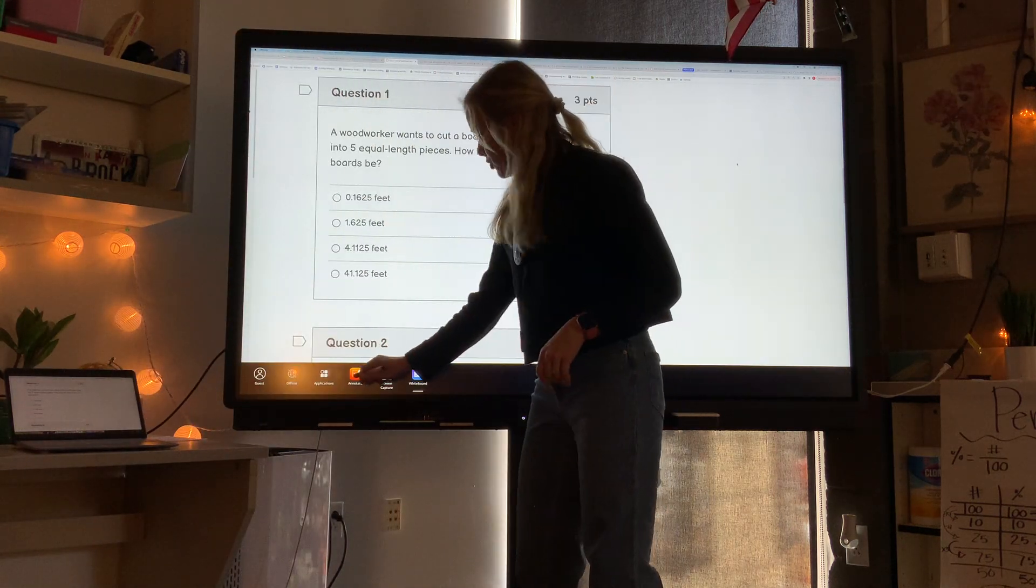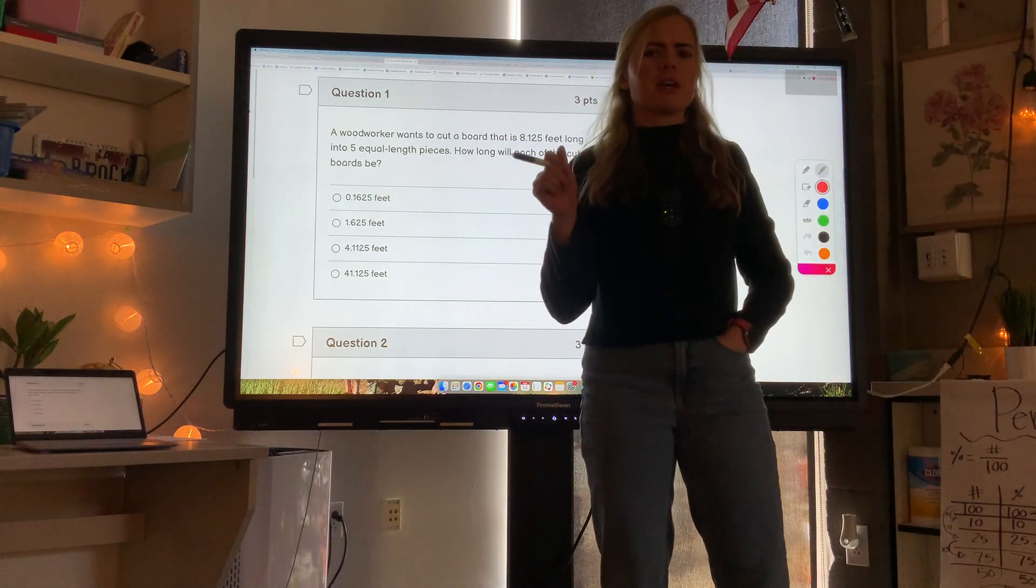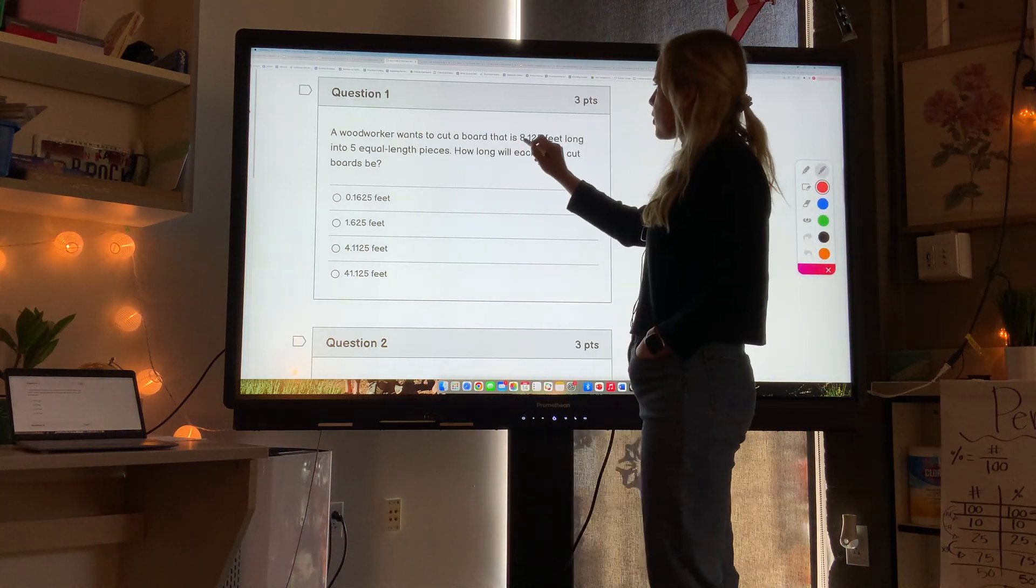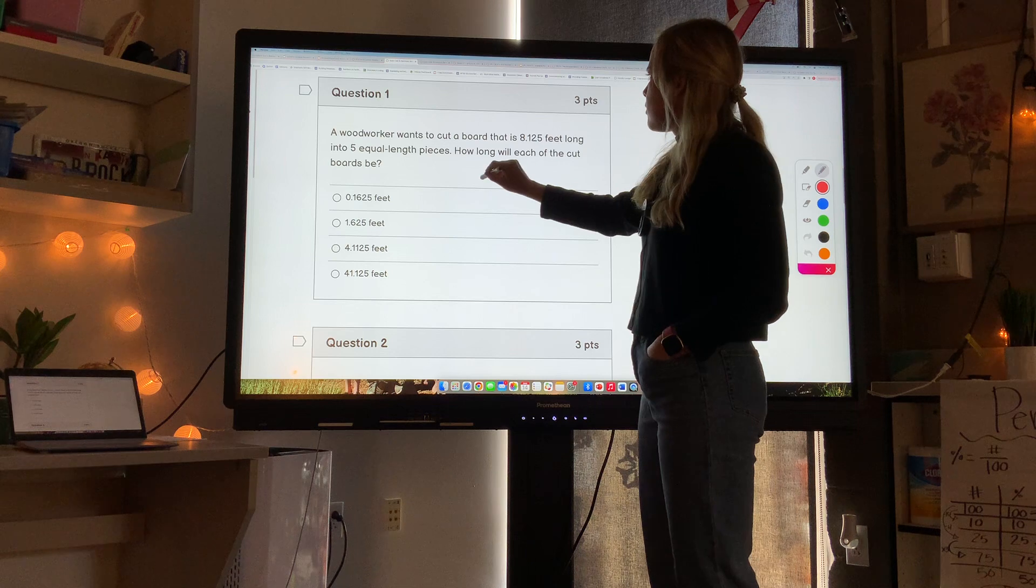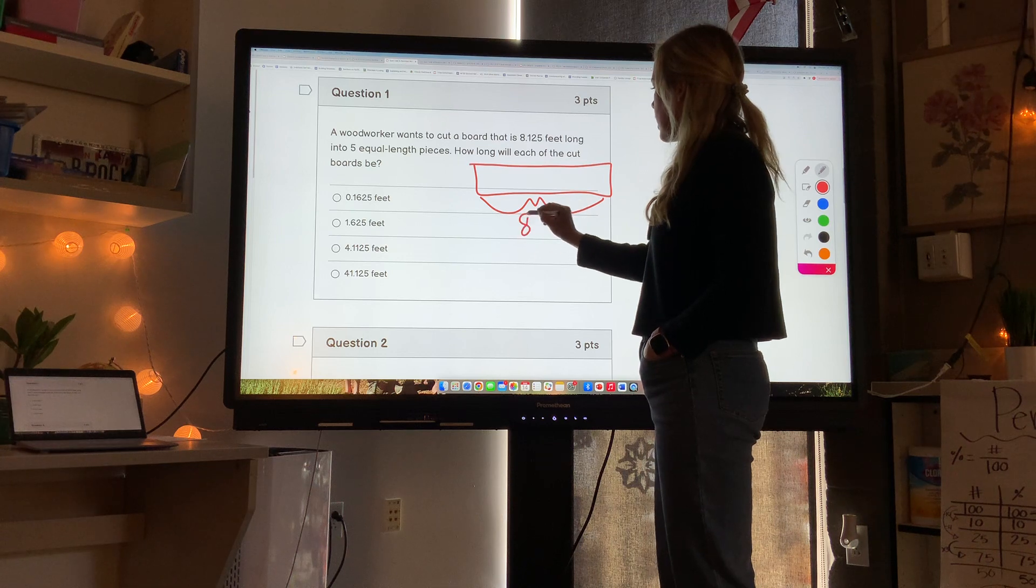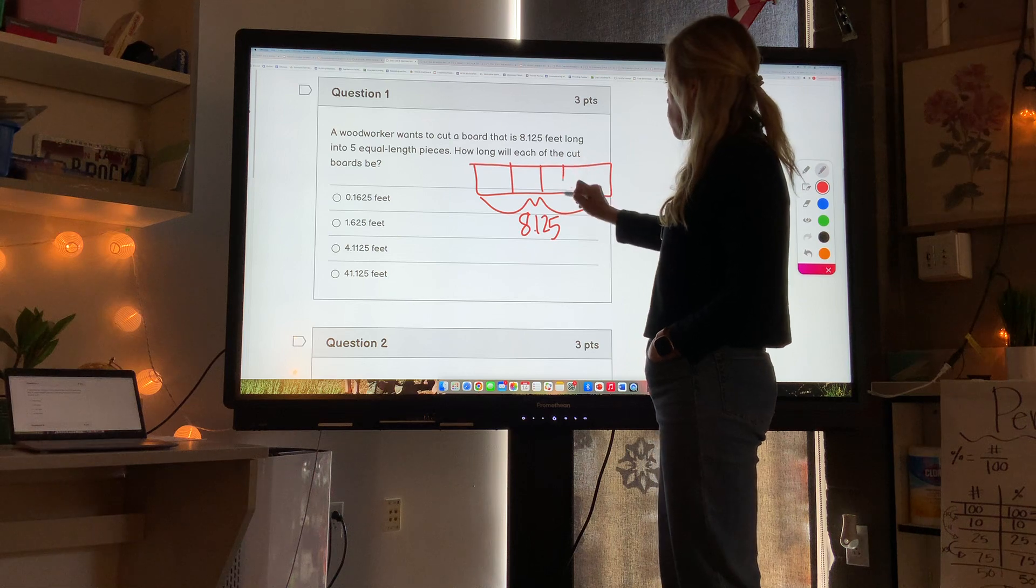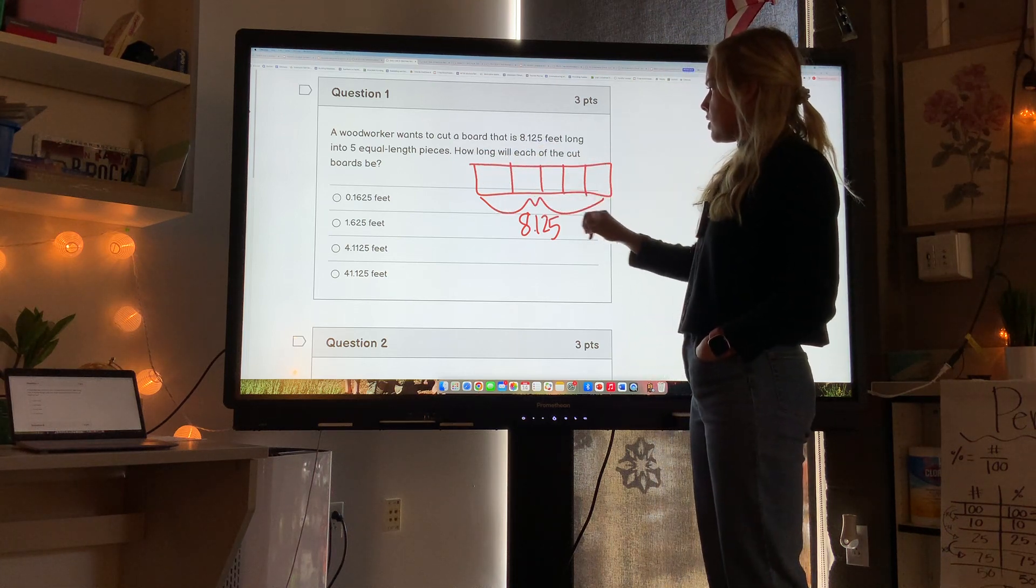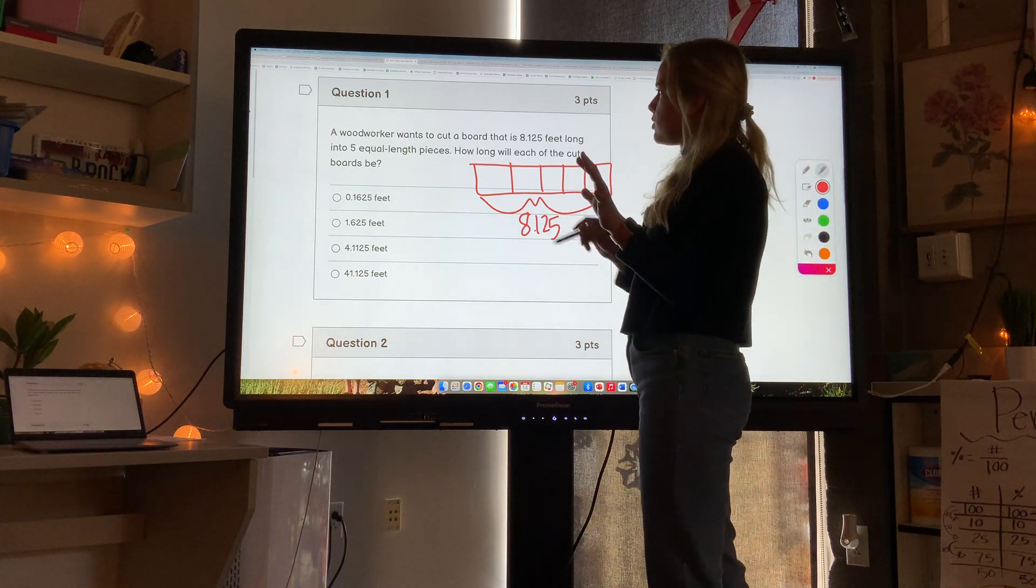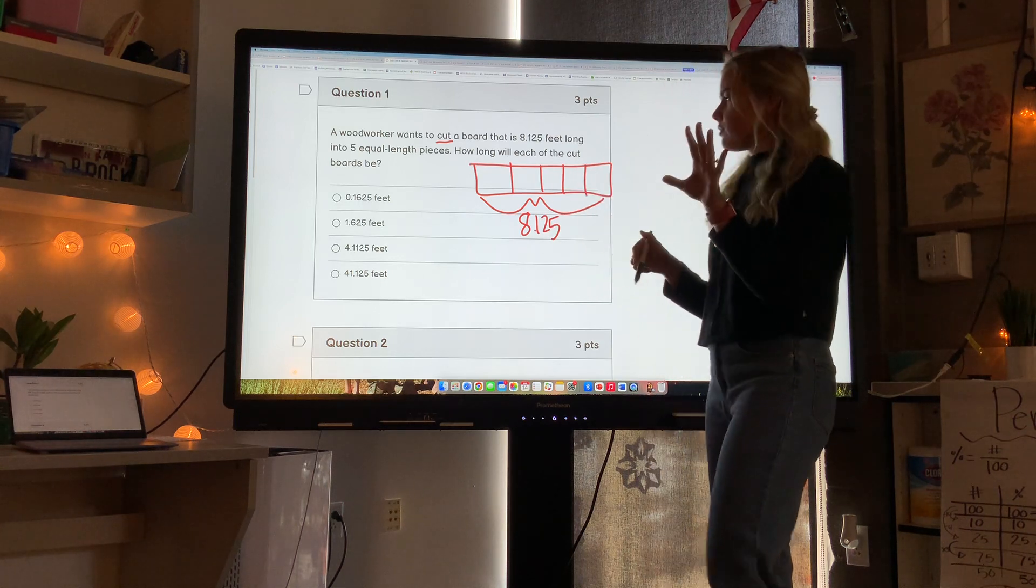First one, make sure you don't use a calculator on this one, especially because this is helping you practice without a calculator. A woodworker wants to cut a board that is 8.125 feet long into five equal size pieces and we want to know how long is each piece. So we're taking this and splitting it into five, or in other words, dividing it by five. Cutting usually means subtraction or division. If we're cutting it into equal size pieces, that means we're dividing.